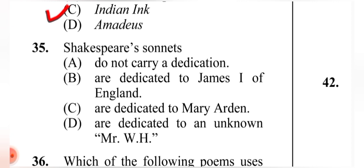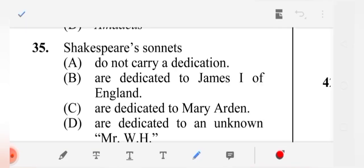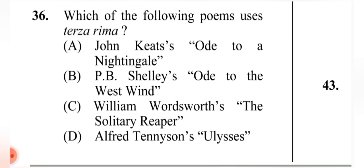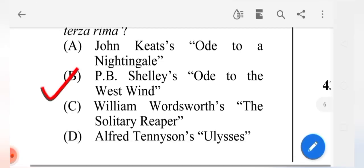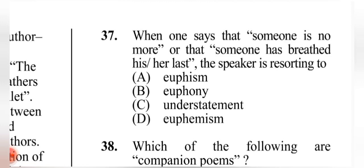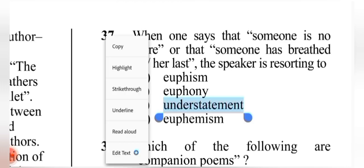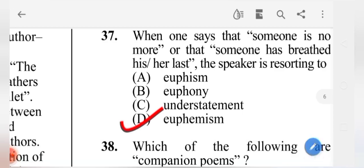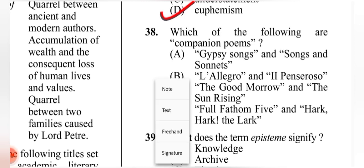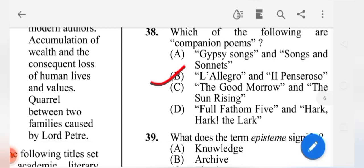Question 35: Shakespeare's sonnets — which option is correct? The correct answer is (D): Shakespeare's sonnets are dedicated to an unknown Mr. W.H. — he remains a mystery man. Question 36: Which of the following poems uses terza rima? The correct answer is (B) P.B. Shelley's 'Ode to the West Wind.' Question 37: When someone says another person is 'no more' or has 'breathed their last,' the speaker is using what? The correct answer is (D) euphemism.